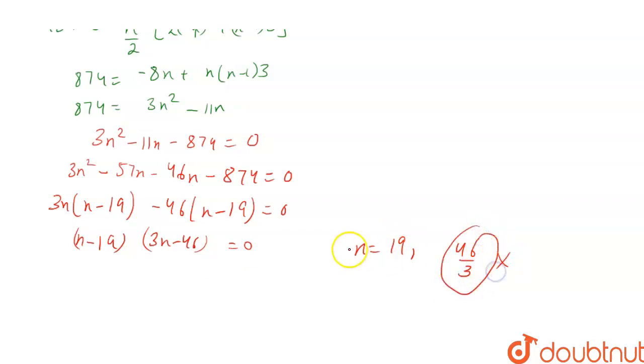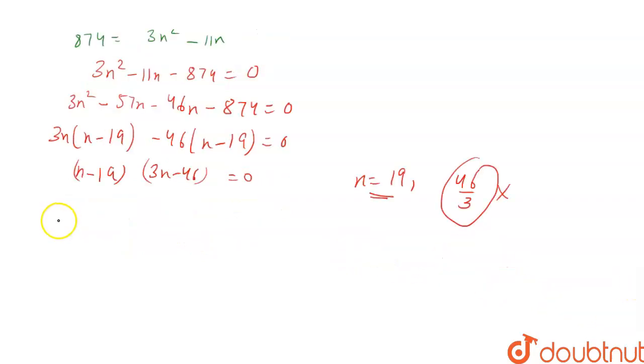Now we know that the formula for nth term of an AP is a + (n - 1)d, and x is the 19th term, that is the last term. So a + (19 - 1)d, where a and d are -4 and 3, which equals -4 + 54. So x comes out to be 50.